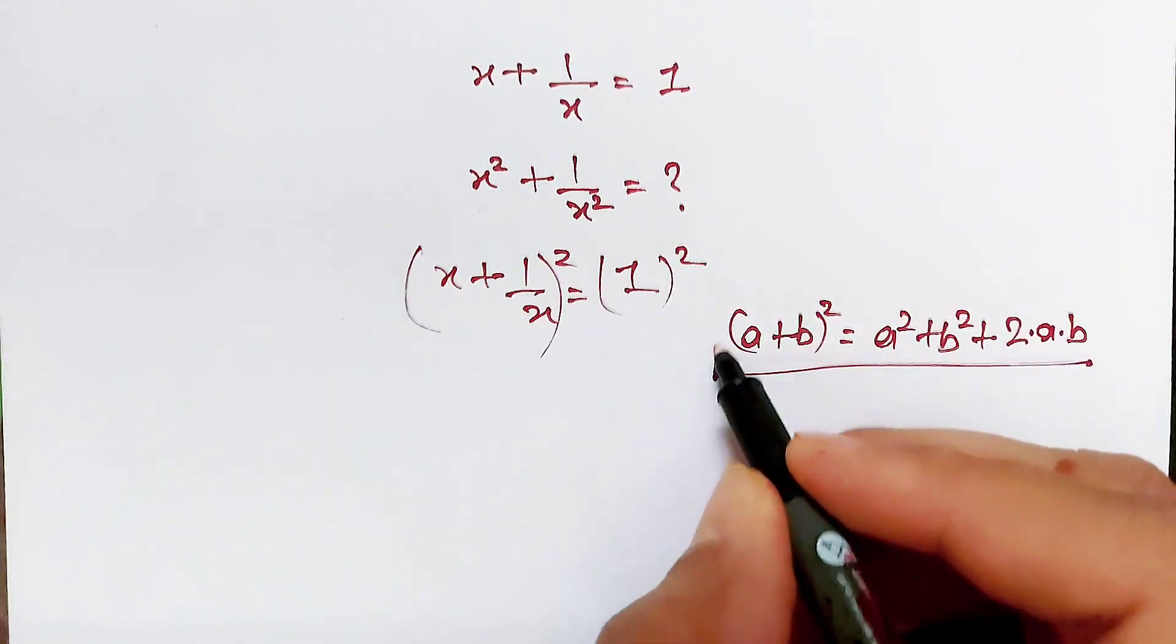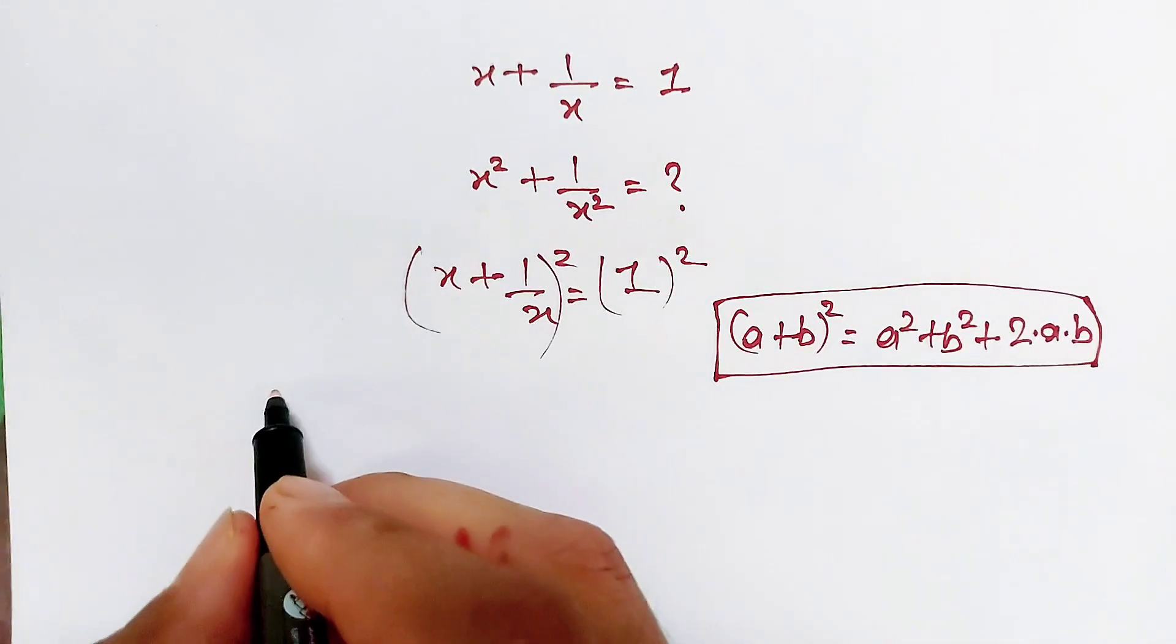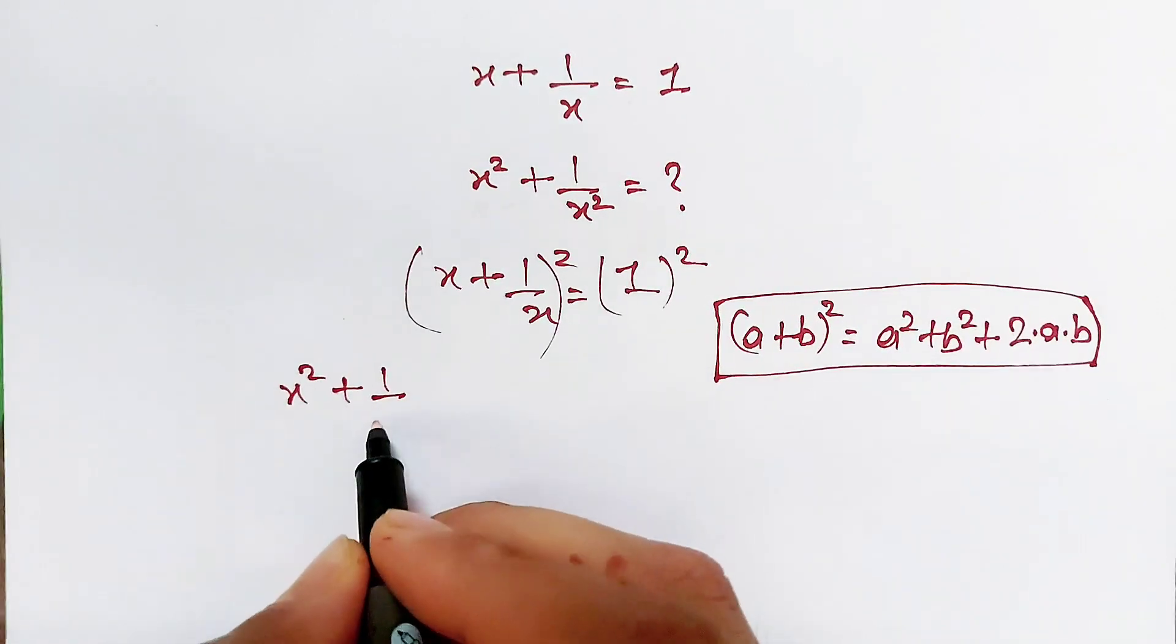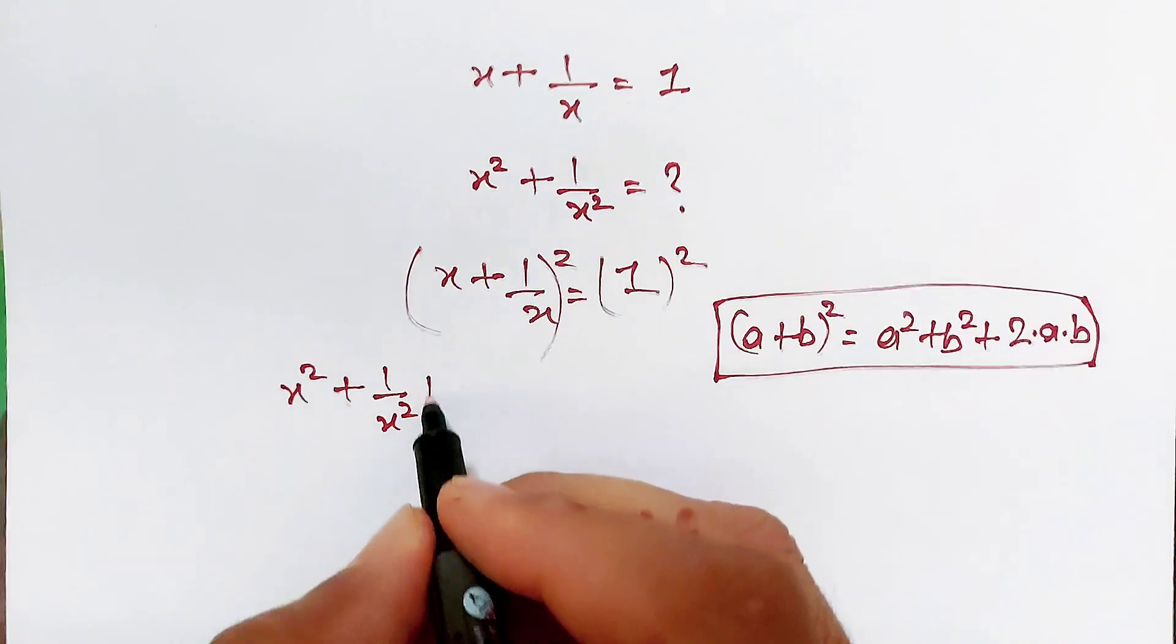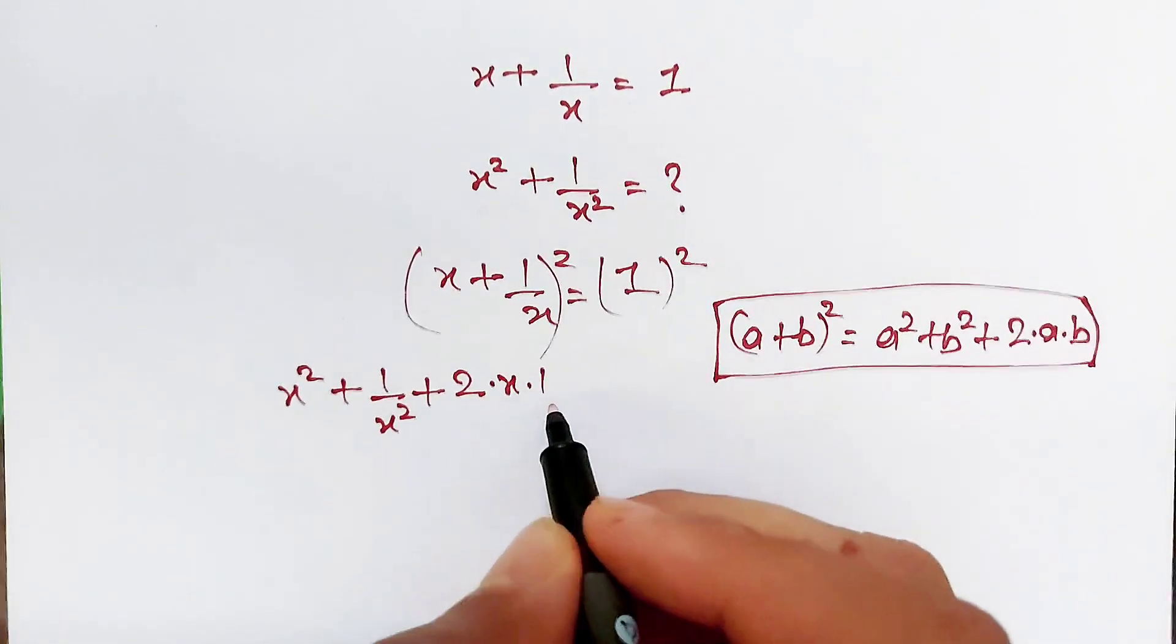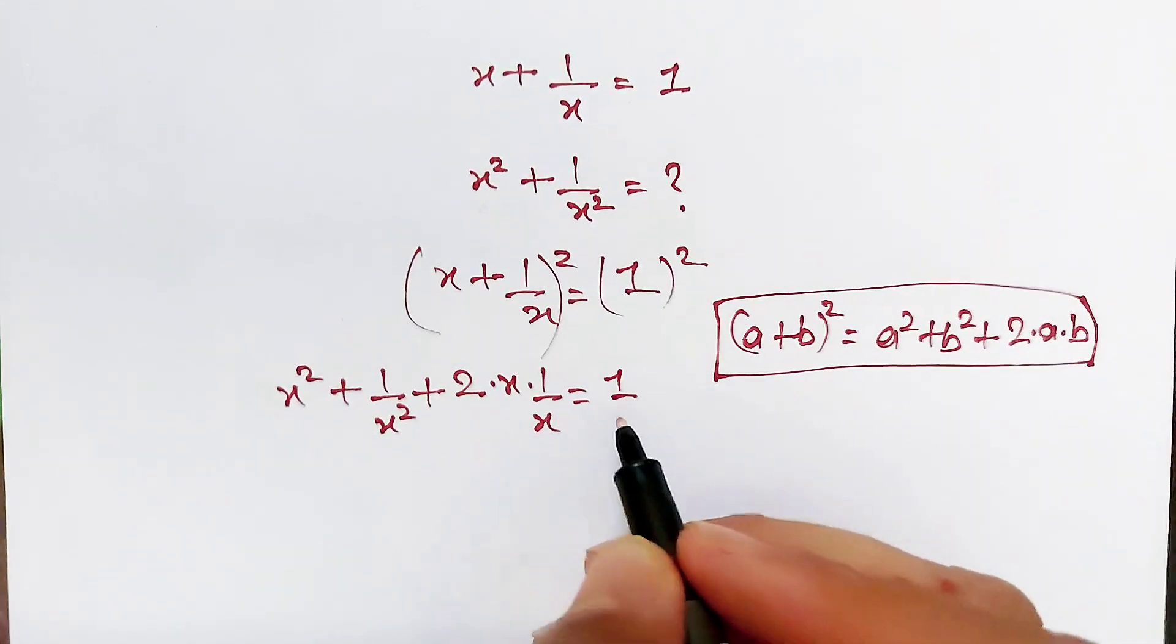Applying this algebraic formula here, we get x square plus 1 over x square plus 2 times x times 1 over x, equal to 1 square, which is 1.